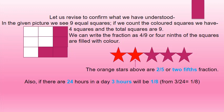Let us revise to confirm what we have understood. In the given picture, we see 9 equal squares. If we count the colored squares, we have 4 squares, and the total squares are 9.